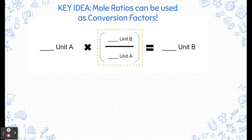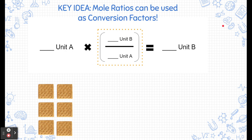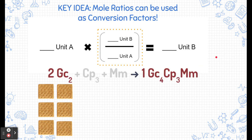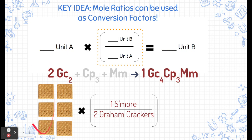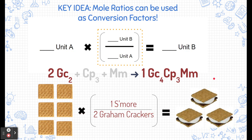A key idea behind mole ratios is that they can be used as conversion factors. Here are those six graham crackers. We know that those graham crackers limit the amount of product we're going to make — it's what we have less of than anything else. So we can use mole ratios as conversion factors to determine how many products we can get. We need our recipe because it has the ratio of graham crackers to s'mores. Starting with six graham crackers, we multiply by the conversion factor from the recipe: one s'more on top, two graham cracker squares on the bottom. Six times one-half gives us how many s'mores we're going to get from this reaction.